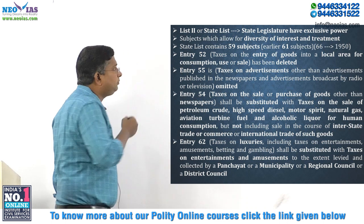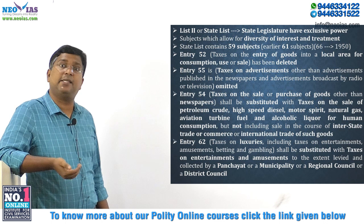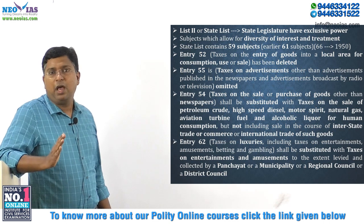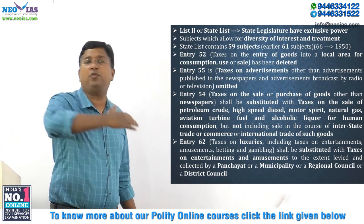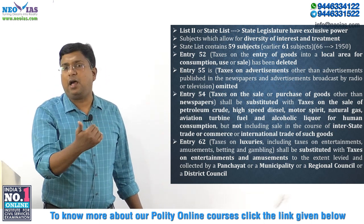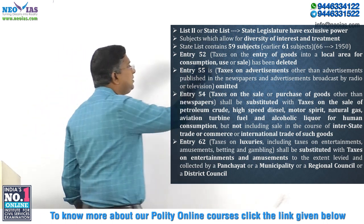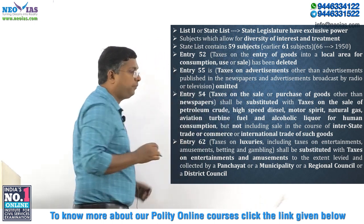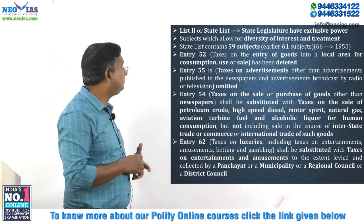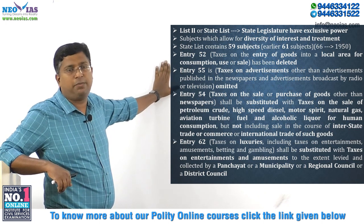Initially, when the Constitution came into existence, the State List consisted of 66 subjects. But through the 42nd Amendment Act, it was reduced to 61 — five subjects were moved to the Concurrent List. With the 101st Constitutional Amendment Act, two more items were removed, so currently the State List consists of 59 subjects.